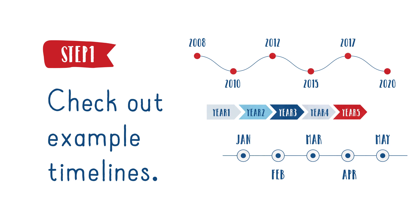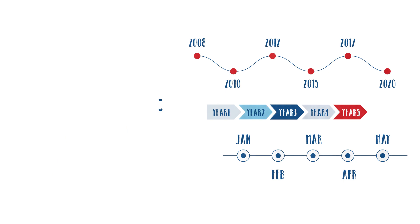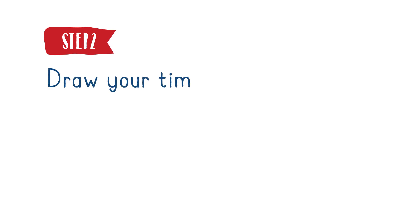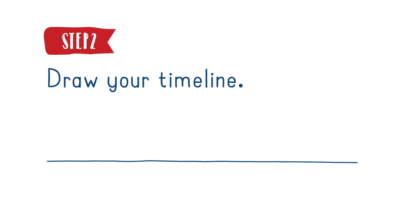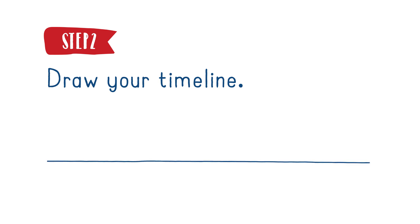Here are some examples we like. Step 2: Draw your timeline. Sketch out the line using a pencil, then trace over it with a dark pen or marker. Label the timeline with the project title and the boundary years. Use a ruler if you are making your timeline by hand.